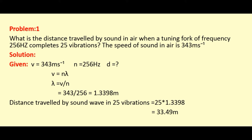First, write the given data. The speed of sound in air V equals 343 meter second minus 1. The frequency N equals 256 hertz. We need to find the distance D travelled by sound in air. We write the formula: velocity V equals N times lambda. First, find the wavelength lambda. So lambda equals V by N. Substituting the values of V and N, we get the value 1.3398 meter.